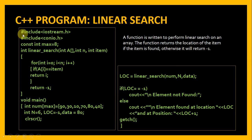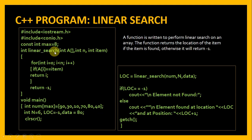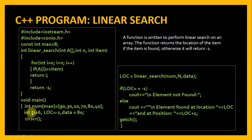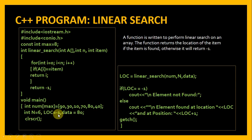Now let us write a C++ program to implement linear search. We are writing a function to perform linear search and the function returns the location of the item if the item is found, otherwise it will return minus one. We have included two header files: iostream.h and conio.h. There is a global variable max of constant integer type with value 8, and then this is the linear search function. The execution always starts from main, so we come to main. An array is declared of size 8, with six elements already initialized. N is the number of elements present in the array which is 6. The variable loc is going to hold the value returned by the function linear search, initialized to minus one because minus one is not a valid index number of the array — the index starts from zero.